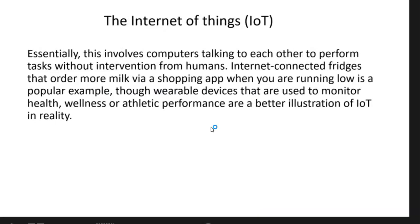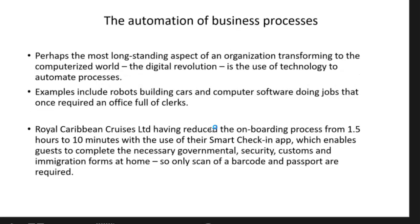Internet of Things essentially involves computers talking to each other to perform tasks without human intervention. An internet-connected fridge that orders more milk via a shopping app when you are running low is a popular example. Wearable devices used to monitor health, wellness, or athletic performance are also better illustrations of the Internet of Things in reality — many of you probably use a smartwatch, and those are examples of that.